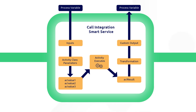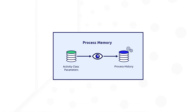within the smart service that executes the API call, you can store and transform the data into structured arrays, like record types, before passing the data to the relevant process variable.